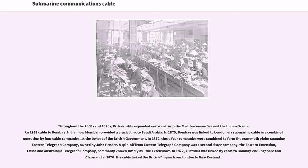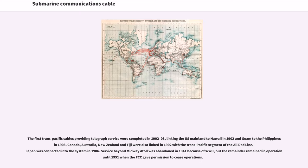A spin-off from the Eastern Telegraph Company was a second sister company, the Eastern Extension, China, and Australasia Telegraph Company, commonly known simply as the Extension. In 1872, Australia was linked by cable to Bombay via Singapore and China, and in 1876, the cable linked the British Empire from London to New Zealand. The first trans-Pacific cables providing telegraph service were completed in 1902–03, linking the U.S. mainland to Hawaii in 1902 and Guam to the Philippines in 1903. Canada, Australia, New Zealand, and Fiji were also linked in 1902 with the trans-Pacific segment of the All-Red Line. Japan was connected into the system in 1906.